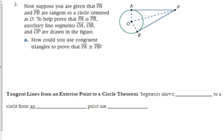Now, there is another property that we need to look at here. It says suppose you're given that segment PA and PB are tangent to a circle. So as soon as you see that word tangent, you need to put a right angle where that segment touches the circle. So at angle A is a right angle. At angle B is a right angle. To help prove that segment PA is congruent to segment PB, an auxiliary line segment OA, OB, and OP are drawn. So it's saying that those aren't really what we're trying to prove, but they're going to help us prove that. It says how could you use congruent triangles to prove that segment PA is congruent to segment PB.